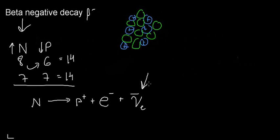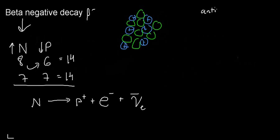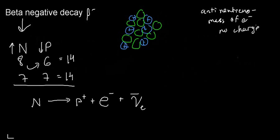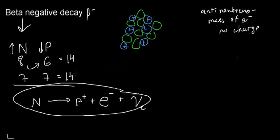All you really need to know about the anti-neutrino is that it has the same mass as the electron but has no charge. That's all you need to know about it at this level. This process does actually take place.